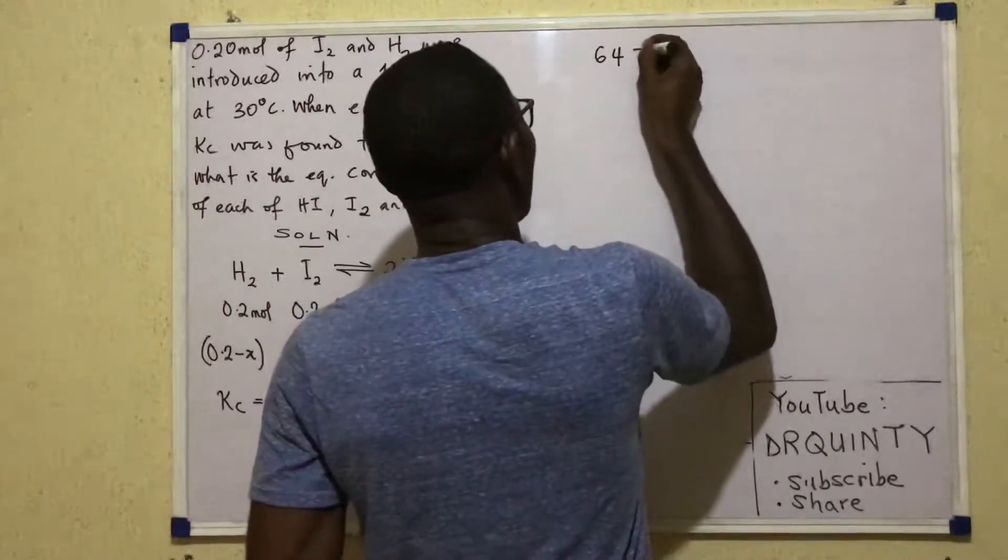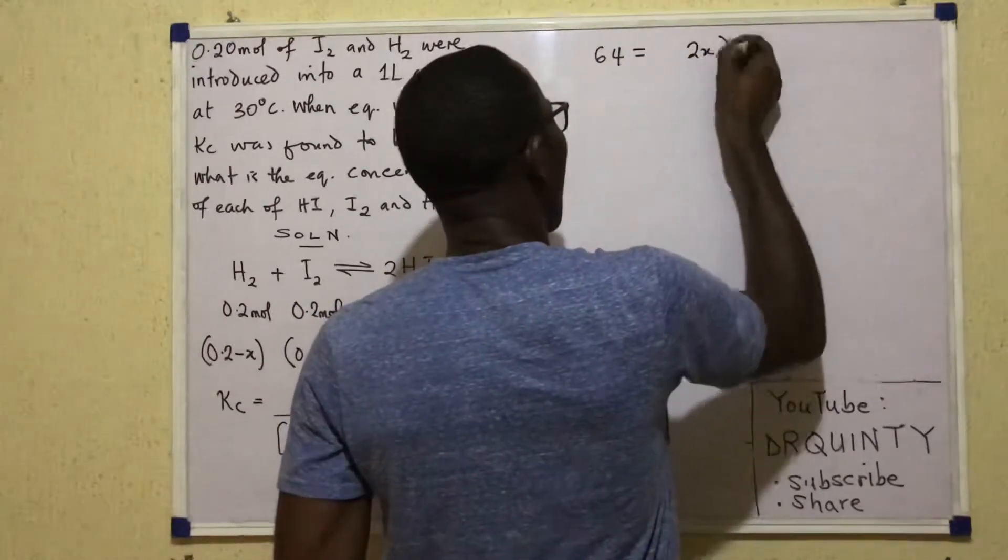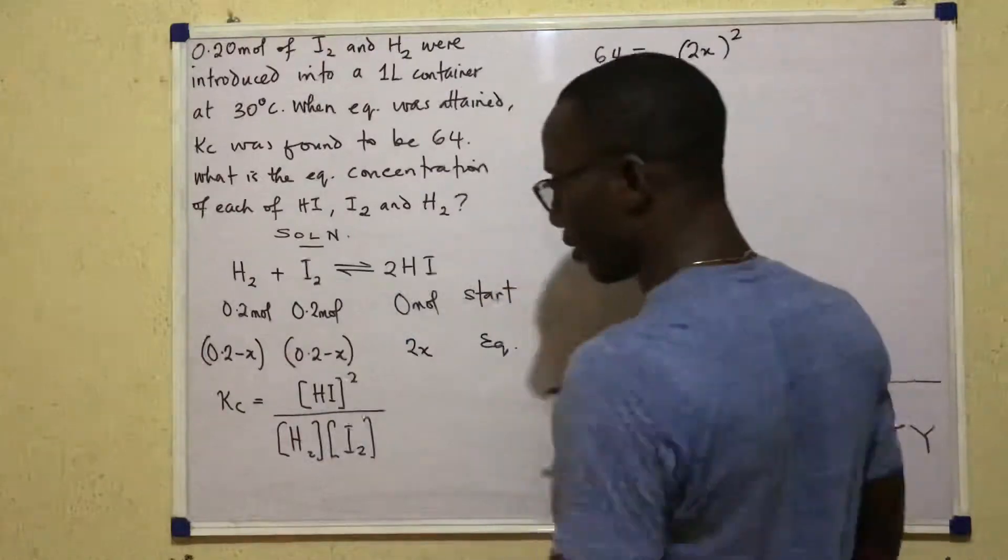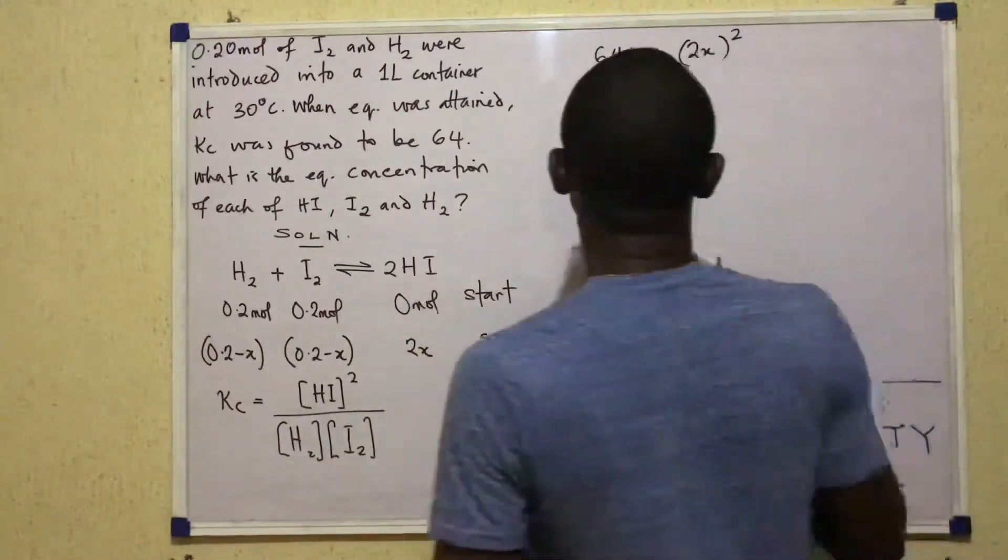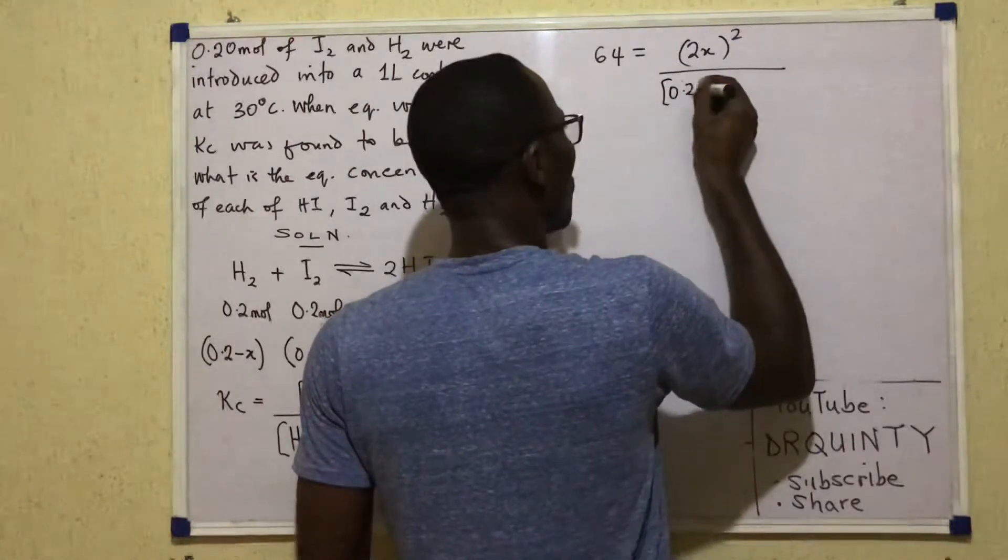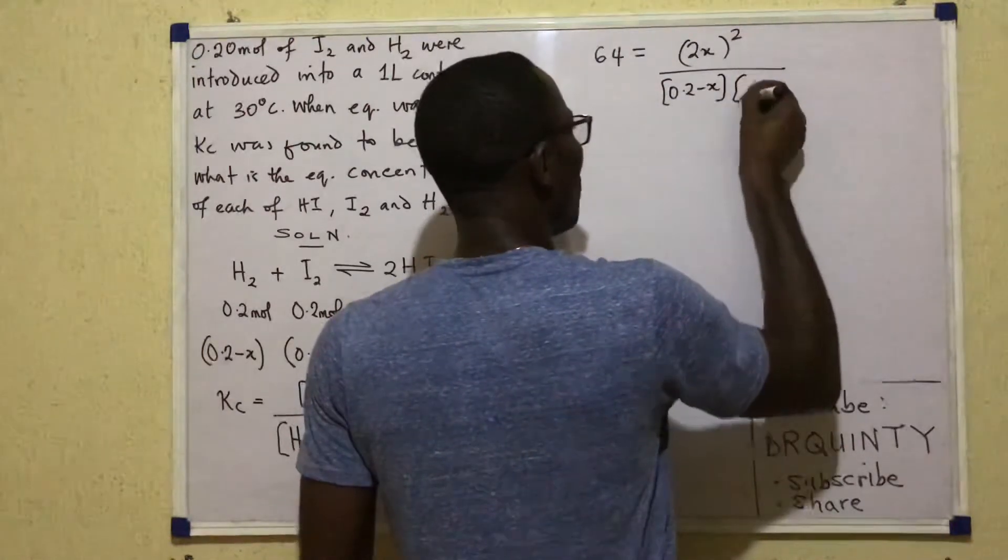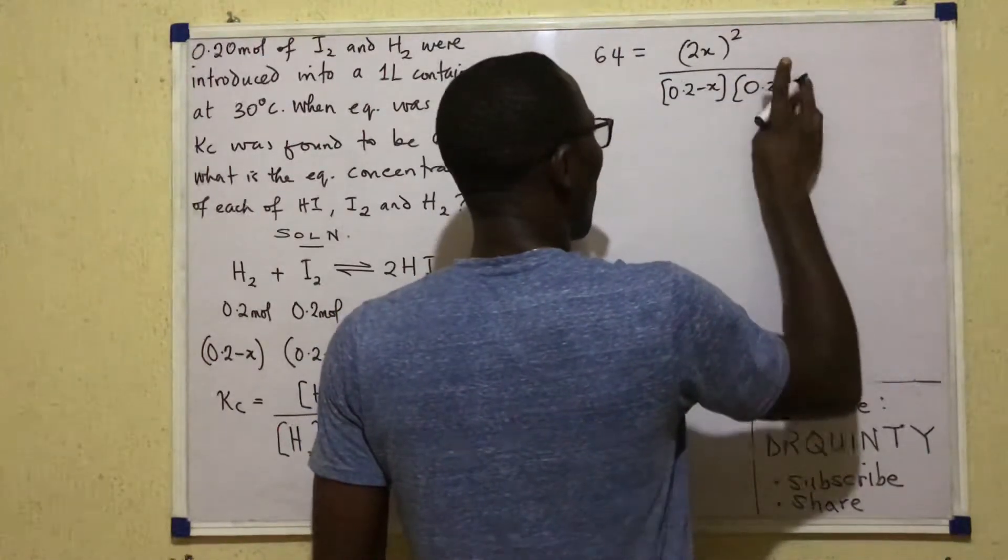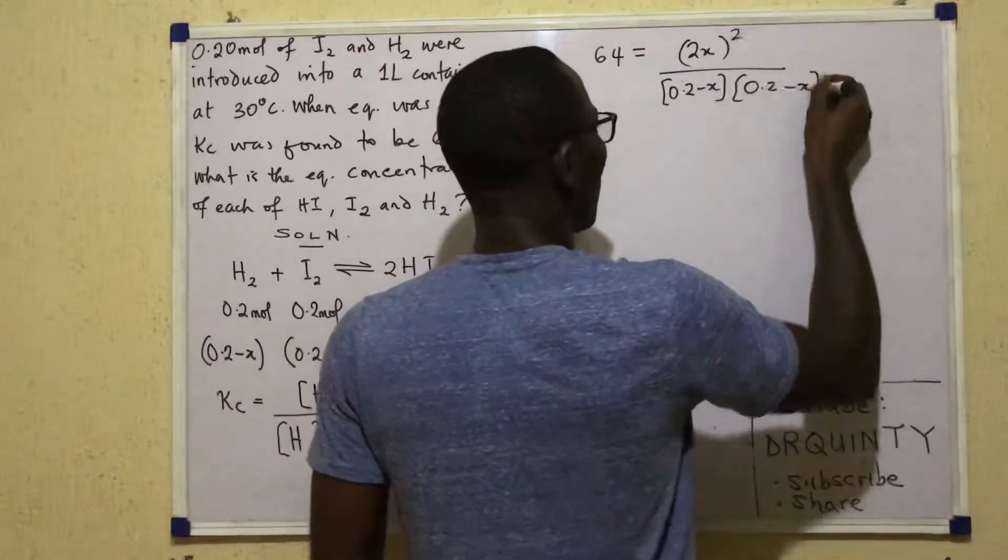So that will say Kc, which is 64, is equal to 2X all squared, that's HI concentration squared,